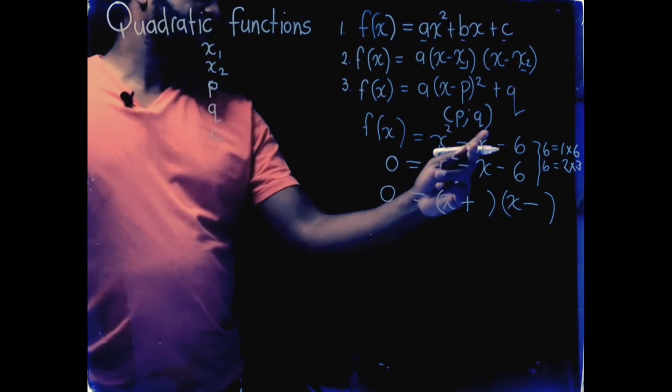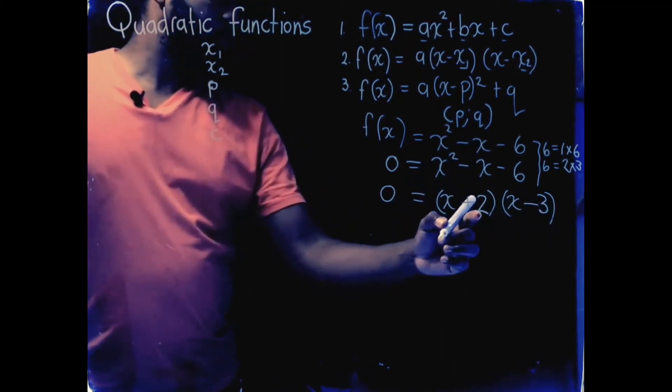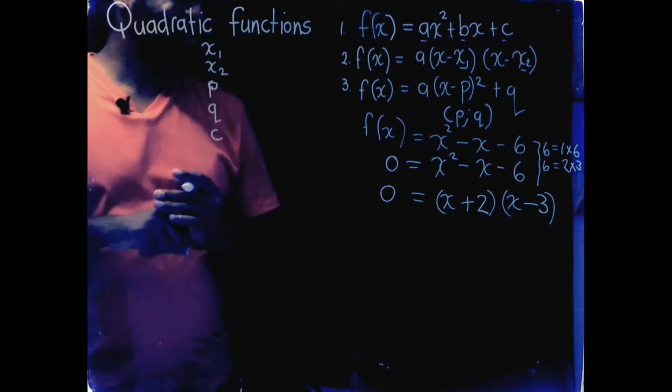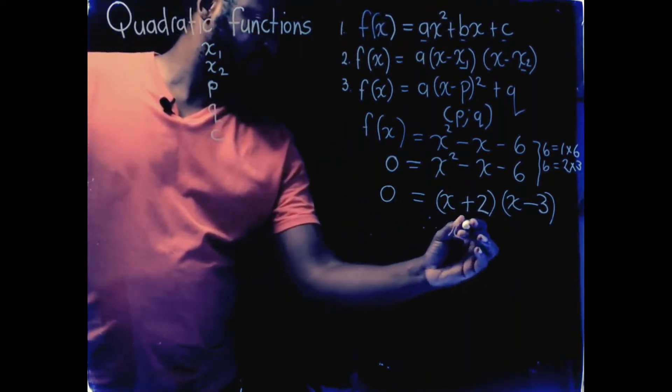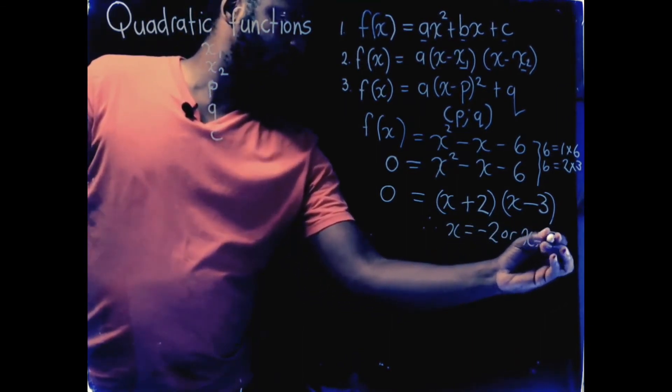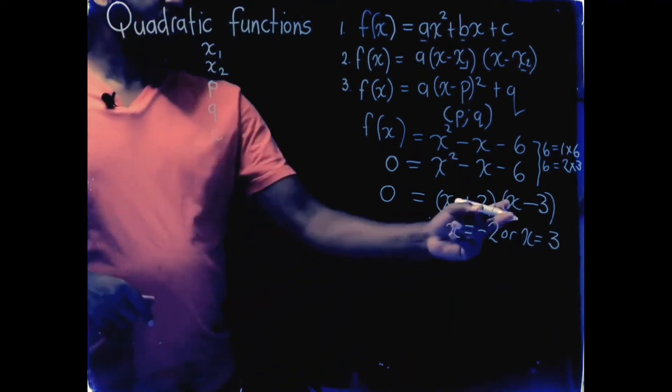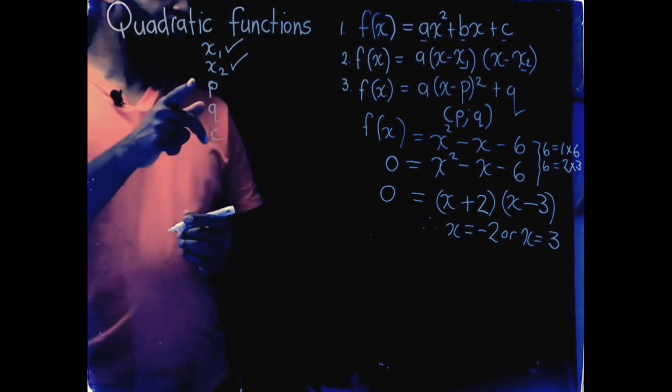I'm going to take the 2 and the 3. So, 2 minus 3 will give me the middle term. This now gives me the solution as x equals minus 2 or x equals a positive 3. So, now I've got x1 and x2.